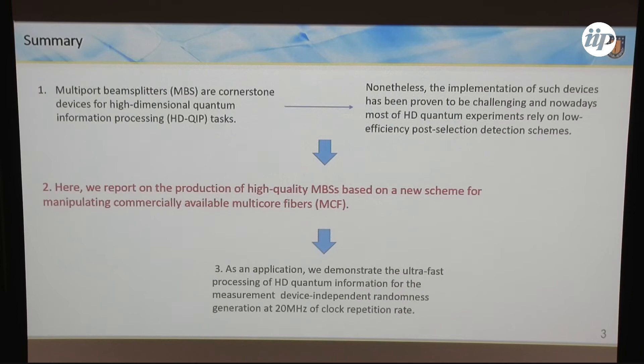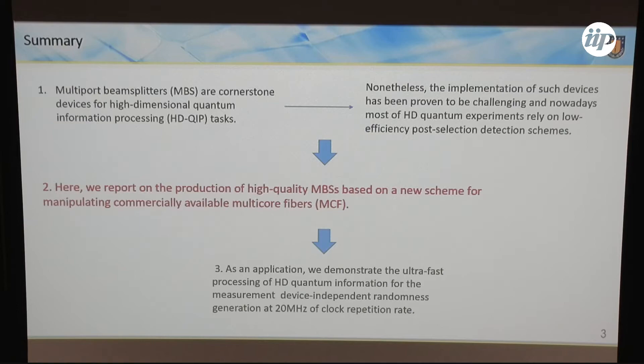The talk is very simple. We know that multiport beam splitters are required for efficiently processing information in higher dimensions, but fabrication of this device has been proved to be very difficult. Most experiments in higher dimensions rely on low-efficiency post-selection schemes. I will talk about the problems of these schemes, then jump to the technology we are developing, explain how we fabricated the multiport beam splitters, and show some applications — specifically a measurement device-independent protocol for generation of randomness.